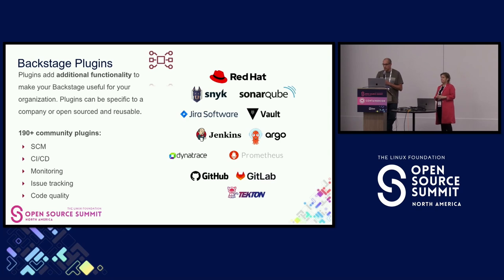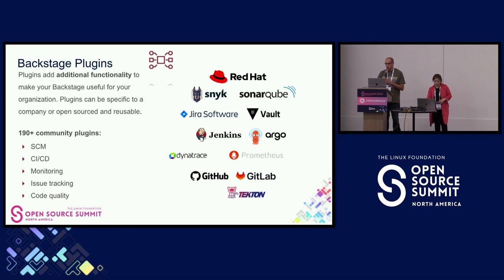The second feature is plugins. As mentioned, they are a great way to extend the platform. There are different types: front-end plugins provide an interface to a downstream service — for example, a CI/CD tool — so developers can find everything in one place. Back-end plugins allow you to import data into the catalog or Backstage, such as APIs, clusters, or pipeline history.